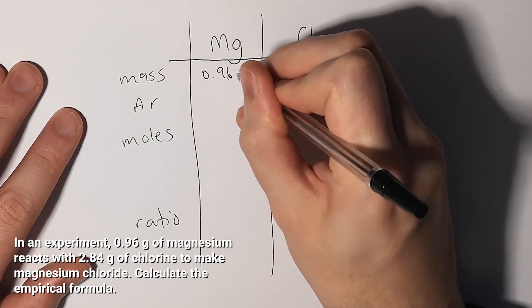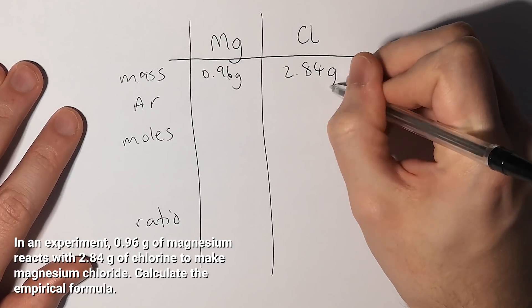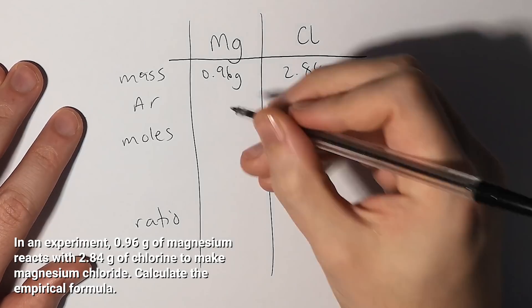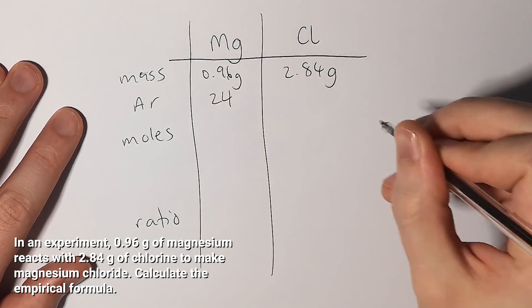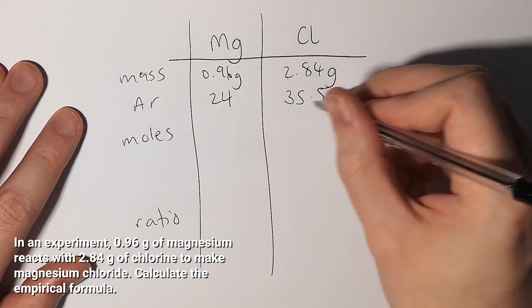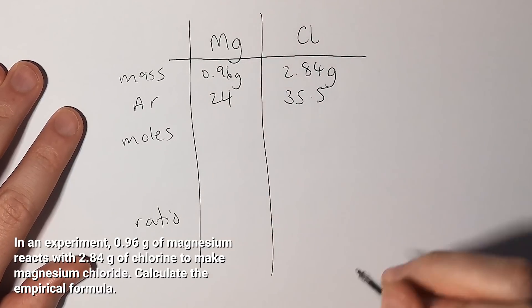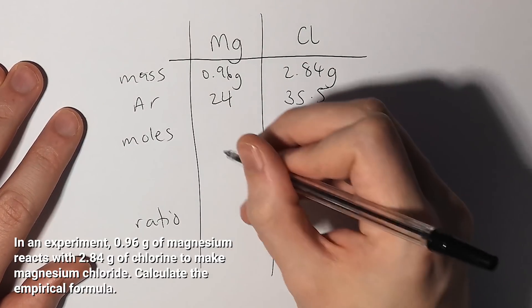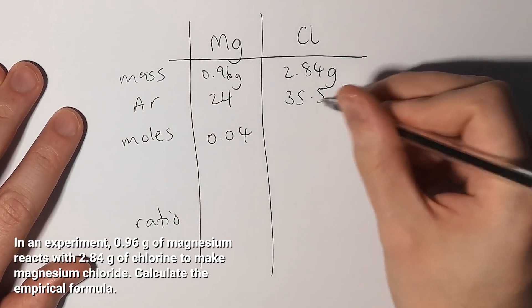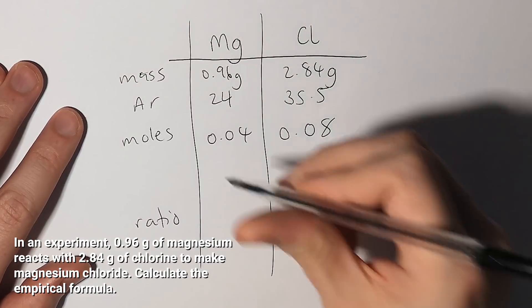For magnesium I was told there was 0.96 grams and for chlorine 2.84 grams. Looking at the periodic table, for magnesium I know it's 24 and for chlorine 35.5. If I divide 0.96 by 24 for magnesium, that gives me 0.04 moles, and 2.84 divided by 35.5 gives me 0.08.